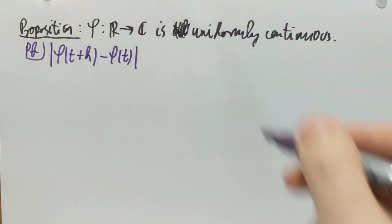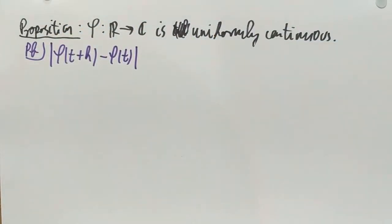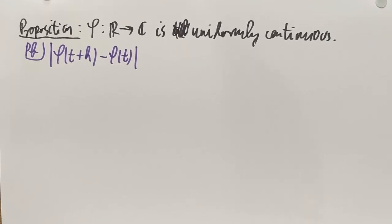What I want to see is that this goes to zero as h goes to zero, but it goes to zero at a pace or at a speed independent of t, independent of where I take this—that would be uniform continuity. Ok, so I want a bound that's independent of t and goes to zero as h goes to zero. That's what I'm going to do.